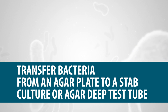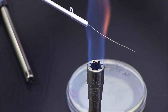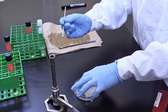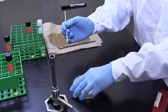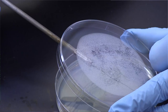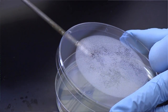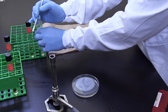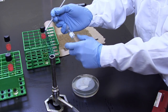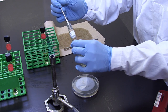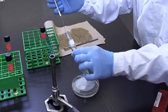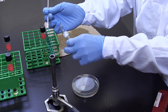Transfer Bacteria from an Agar Plate to a Stab Culture or Agar Deep Test Tube. Sterilize the inoculating needle and allow it to cool for 10 seconds. Lift the lid of the agar plate at a 45-degree angle with your free hand and hold it over the base as a shield to prevent airborne contaminants. Gently rub the needle over a single colony. Stab two-thirds of the agar with the needle two to three times in the center to transfer the bacteria to the agar deep. Use the aseptic technique to remove and replace the lid of the agar deep test tube.